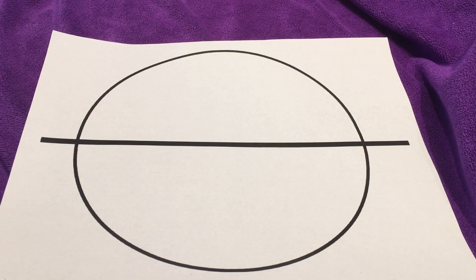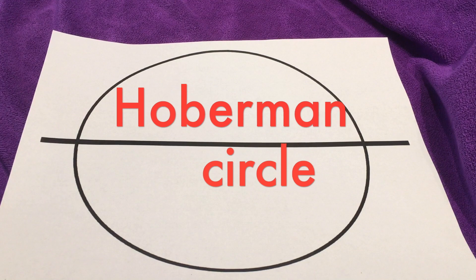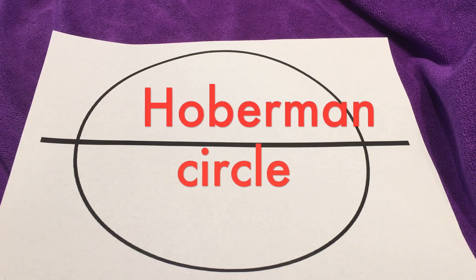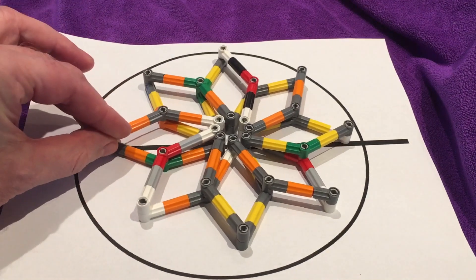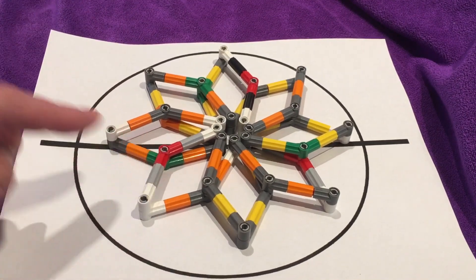So to understand what a Hoberman sphere is, we use one of the basic elements of that sphere called the Hoberman circle. Now these circles start out looking something like this. Okay, that is a Hoberman circle, believe it or not.